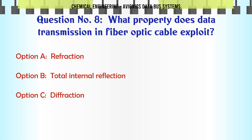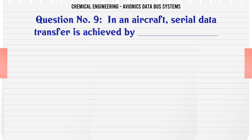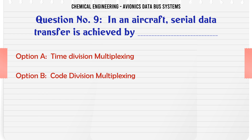What property does data transmission in fiber optic cable exploit? A. Refraction, B. Total internal reflection, C. Diffraction, D. Dispersion. The correct answer is Total internal reflection.